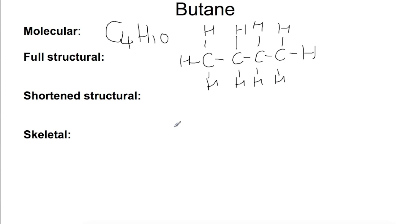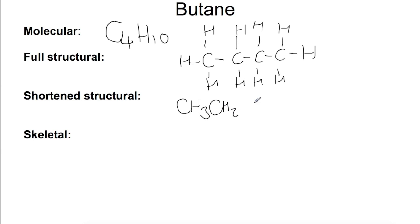Then we can look at the shortened structural formula. For the shortened structural formula we're just going to take out all of the bonds and just write it as a line. So we'll have CH3 for the first carbon, then CH2, CH2, and CH3. We looked at this in National 5.